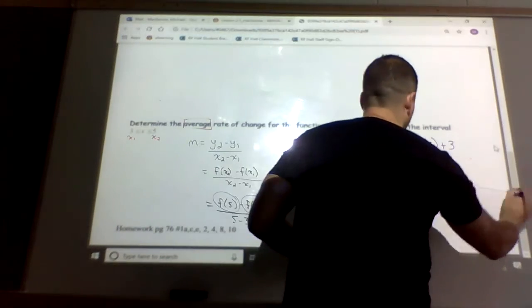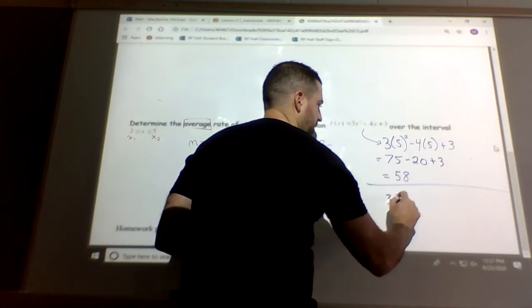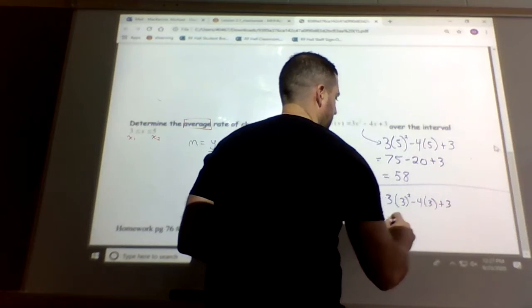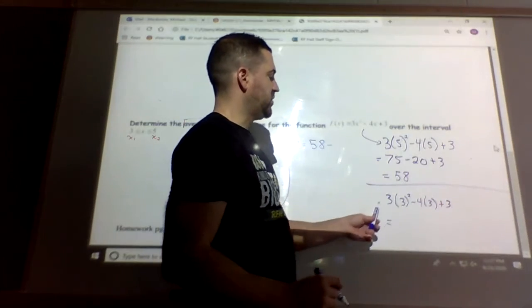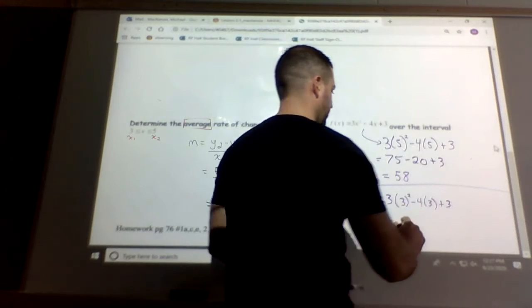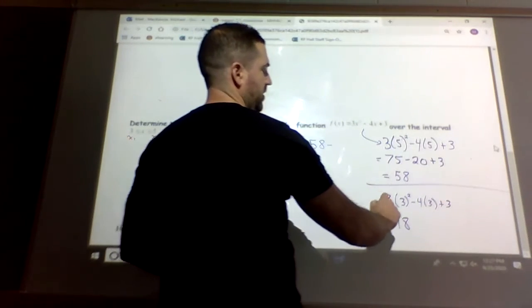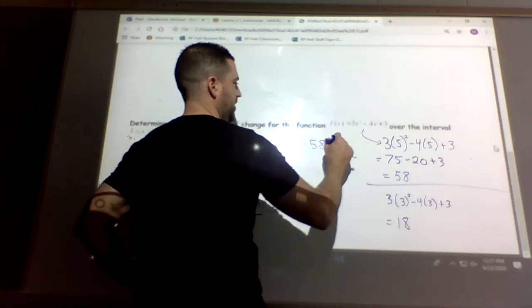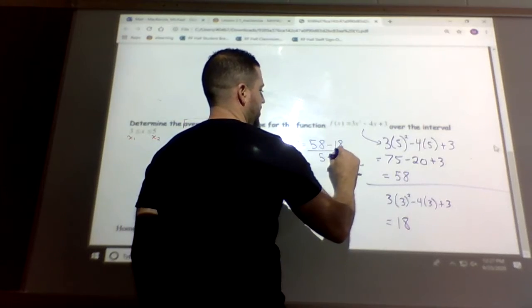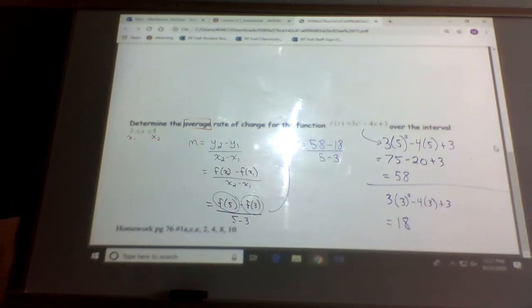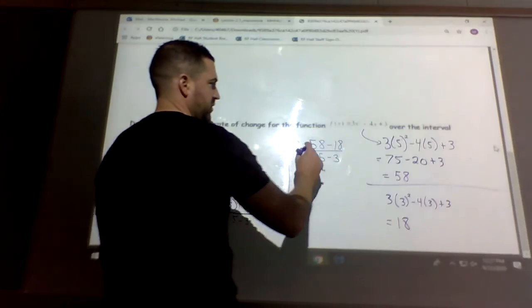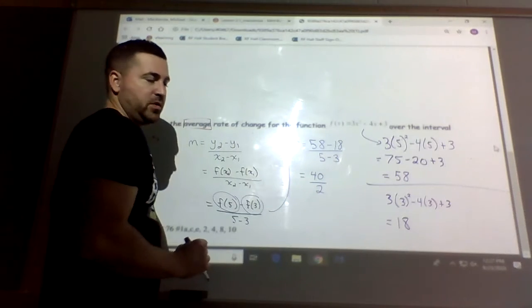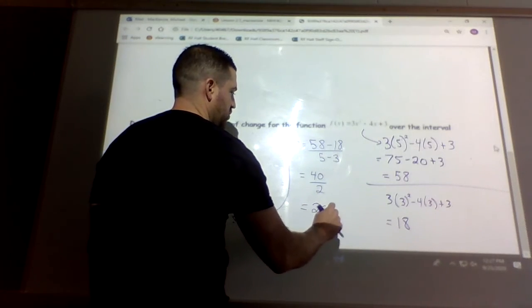So f of 5 is 58. And now we do the same thing for f of 3. So for f of 3 we substitute 3 in. So 3 times 3 squared minus 4 times 3 plus 3. So we get 9, 27 minus 12 is 15 plus 3 is 18. So 9, 27 minus 12 is 15, 18. So minus 18 all over 5 minus 3. Now we solve this. So 58 minus 18 is 40. 5 minus 3 is 2. So we divide it and now we get 20.